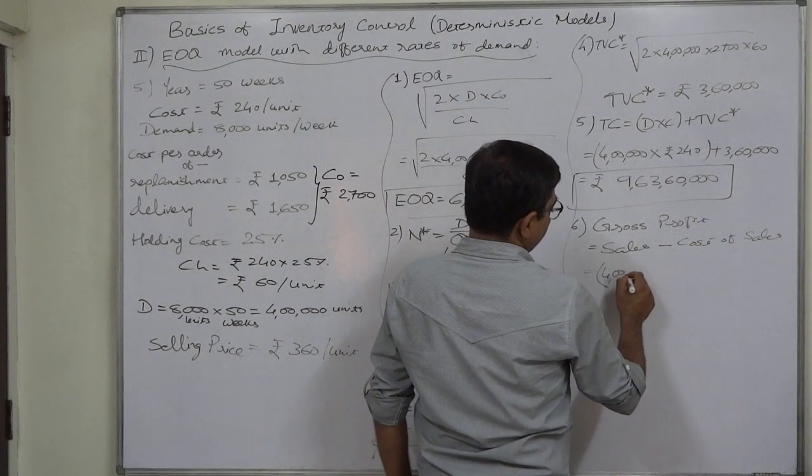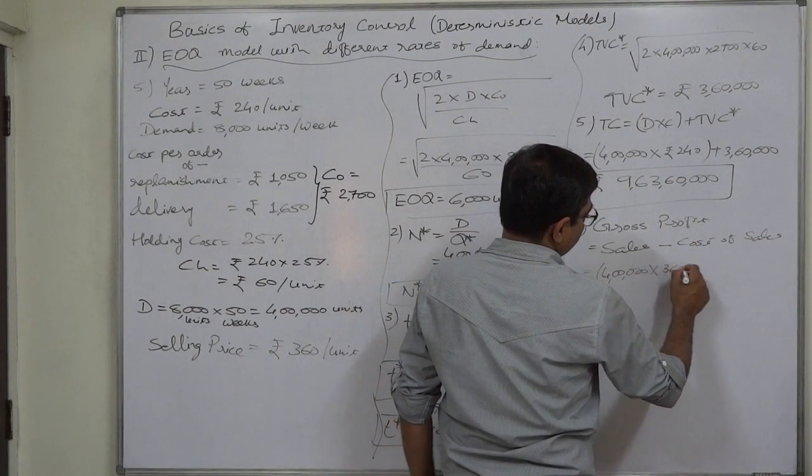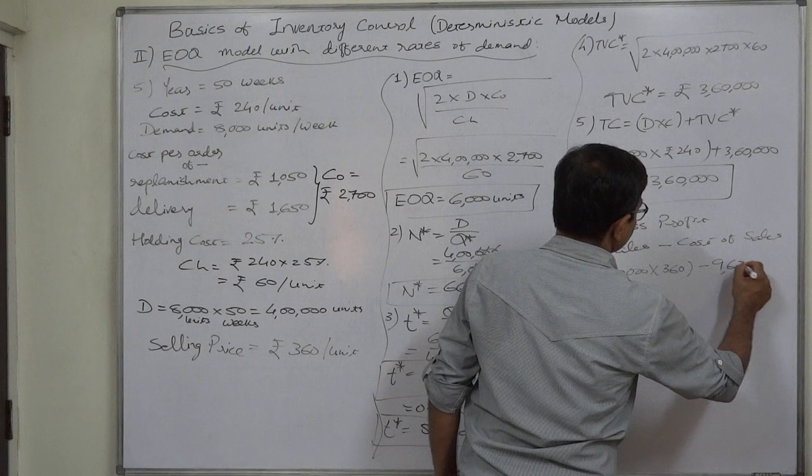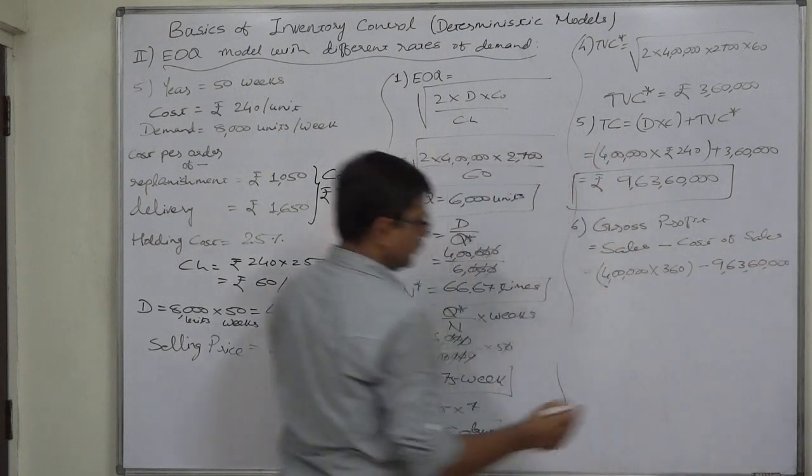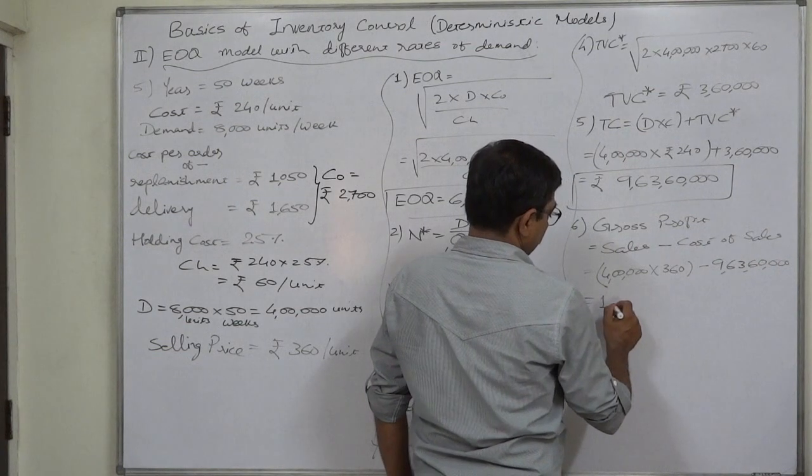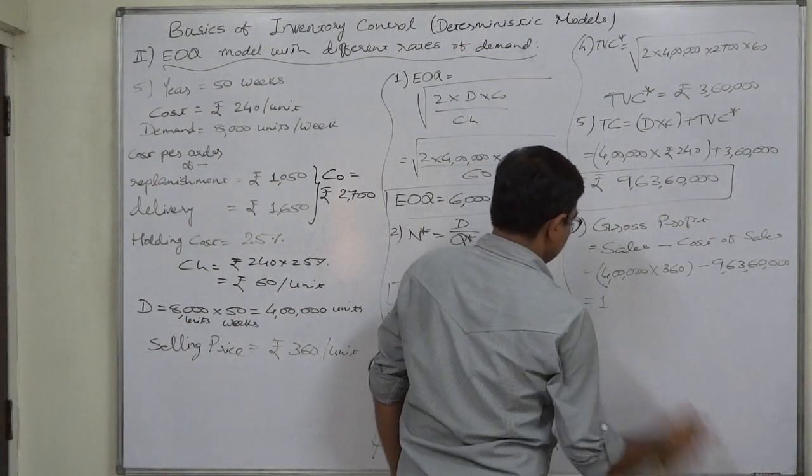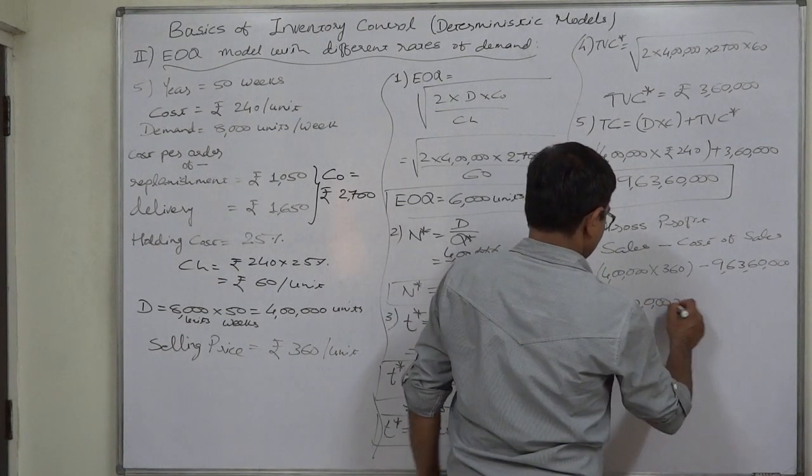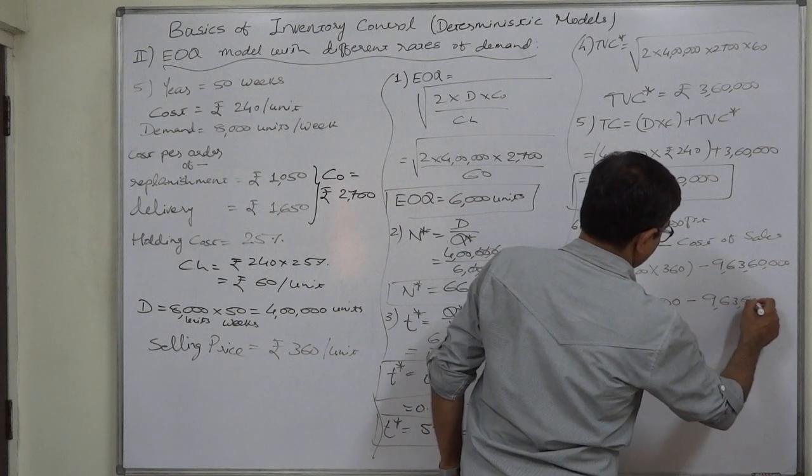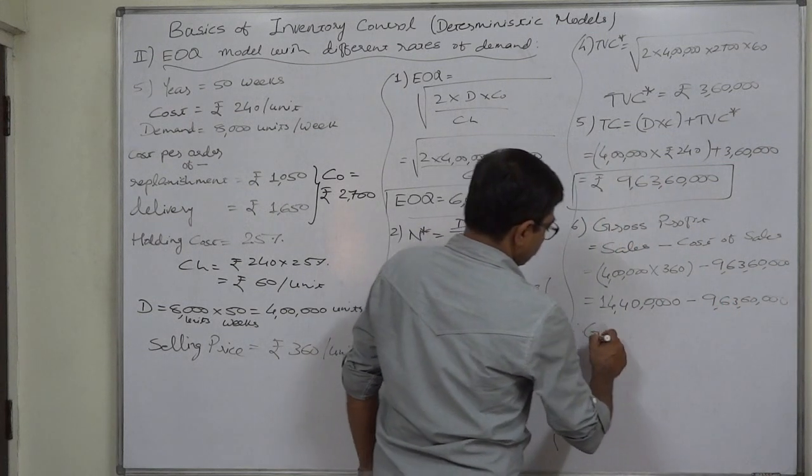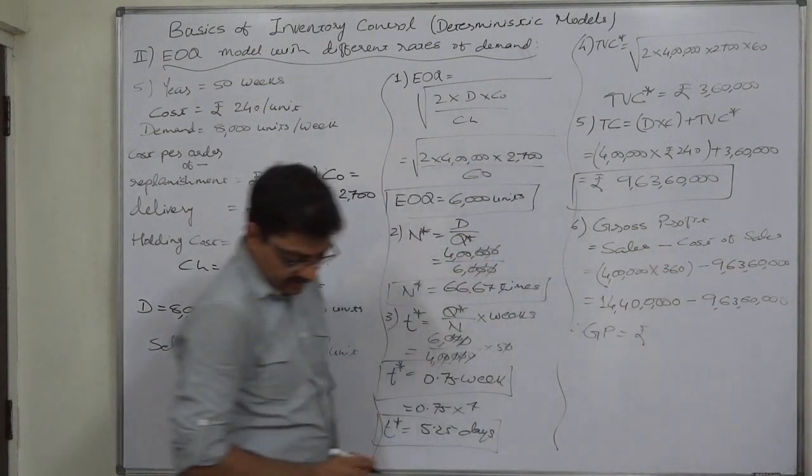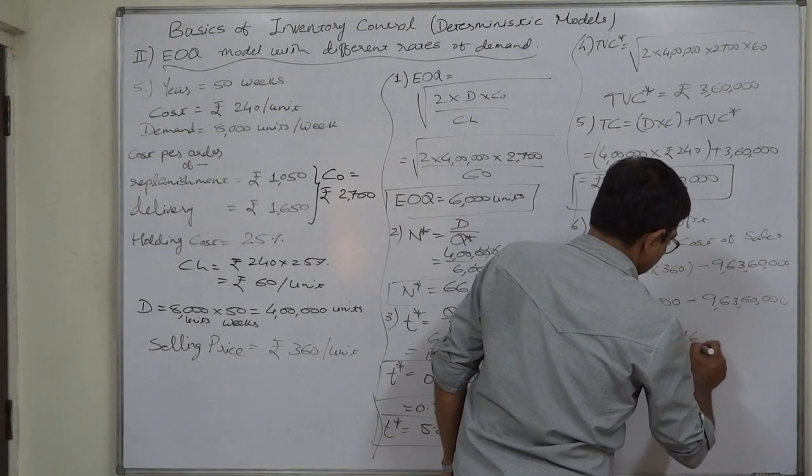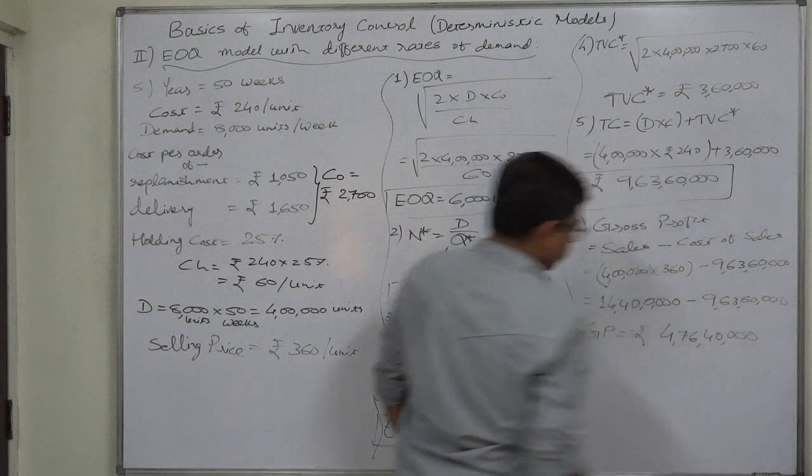Sales revenue will be 400,000 units into rupees 360 minus our cost of sales, which comes to 96 million 360,000. So the GP or gross profit will be exactly equal to 47 million 640,000 rupees.